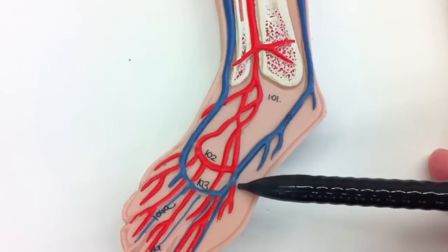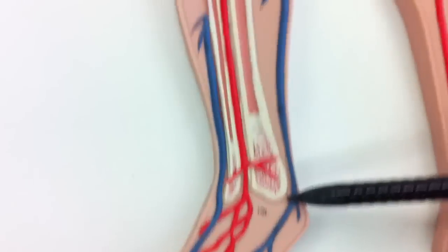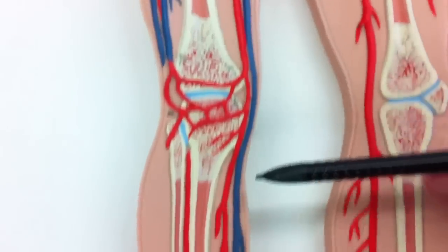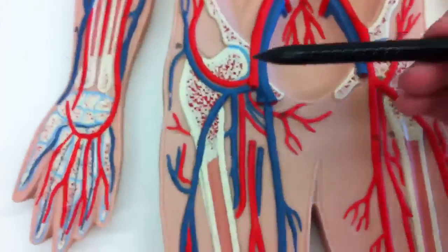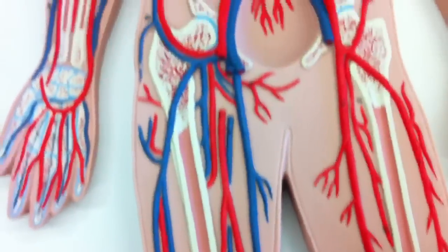So that does it for the arteries. Now for the veins, we have the arcuate vein right here and the dorsalis pedis vein. We have this really long saphenous vein right here. And then this one doesn't have it, but the femoral vein is cut off right here, but it should go down the middle.